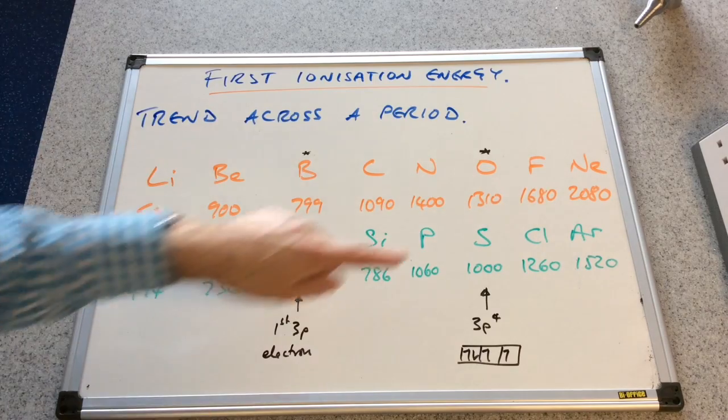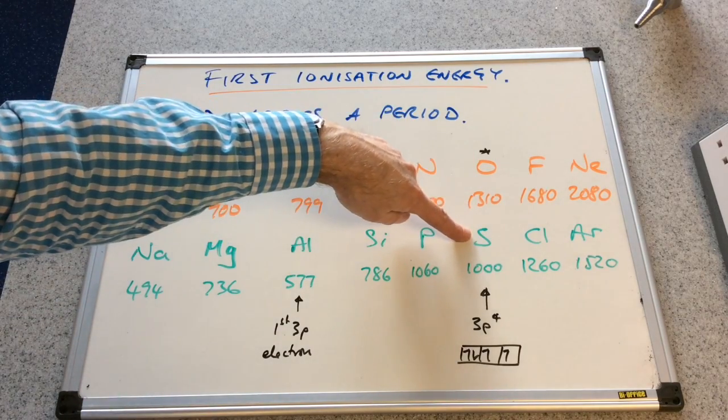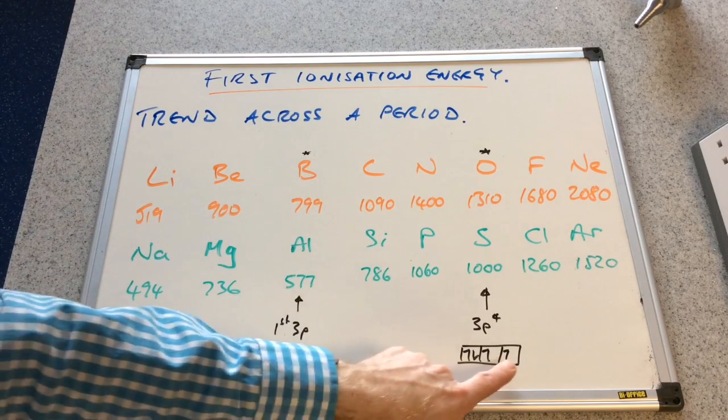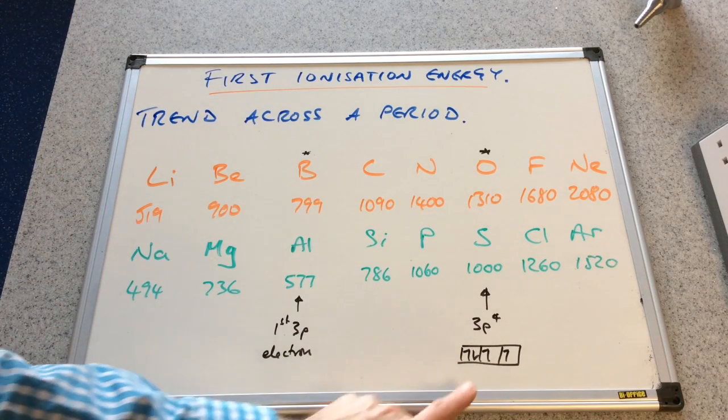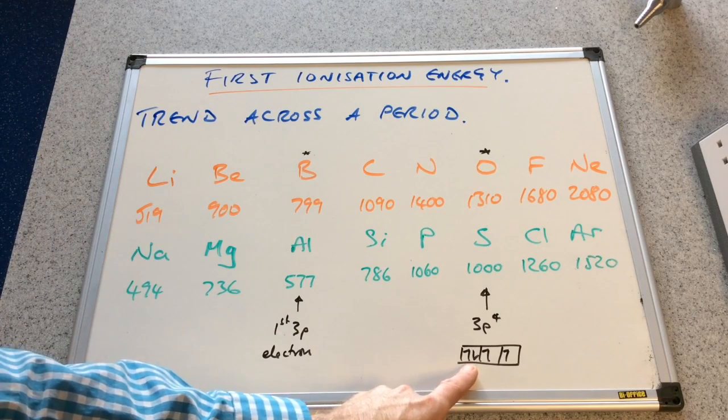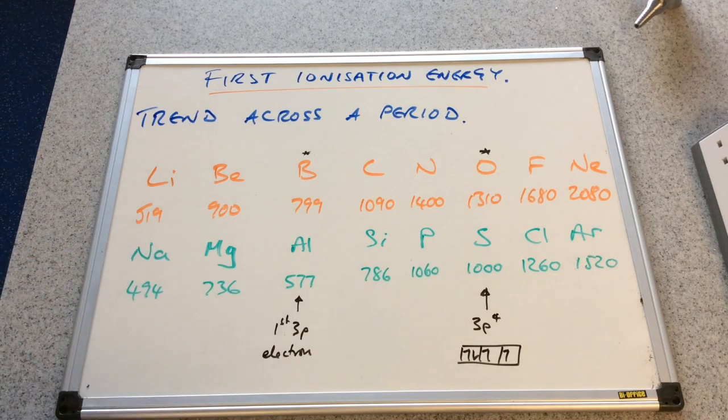And then when you get the sulphur, which is directly below oxygen, we've got a 3p4 configuration. You can see I've drawn the electrons in boxes there. So that's the first paired electron. That little bit of extra repulsion makes it a little bit easier to remove the electron.